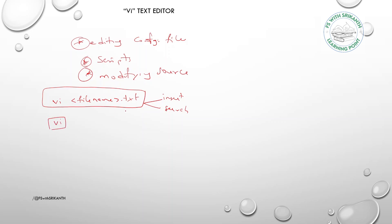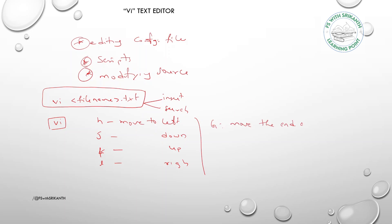With the vi command, the file opens and cursor navigation uses h, j, k, l keys: h moves left, j moves down, k moves up, and l moves right. Capital G is used to move to the end of the file, and these are shortcuts you should definitely remember.